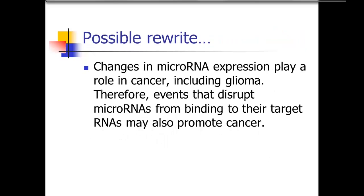I took that passage and rewrote it, trying to fix those issues. I didn't have the author next to me, so I can't be 100% sure I've fully represented what they meant, but I think I've got the general idea. The rewrite says: 'Changes in microRNA expression play a role in cancer, including glioma. Therefore, events that disrupt microRNA from binding to their target RNAs may also promote cancer.' That's a lot easier to understand, and notice how much shorter it is than the original.